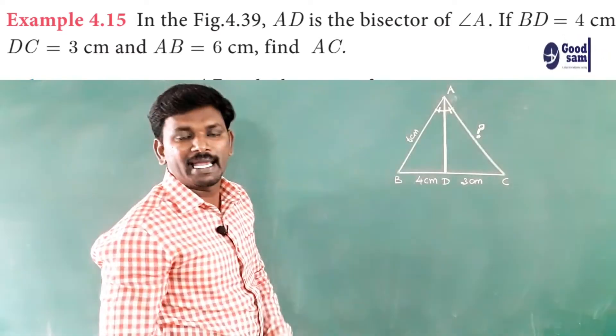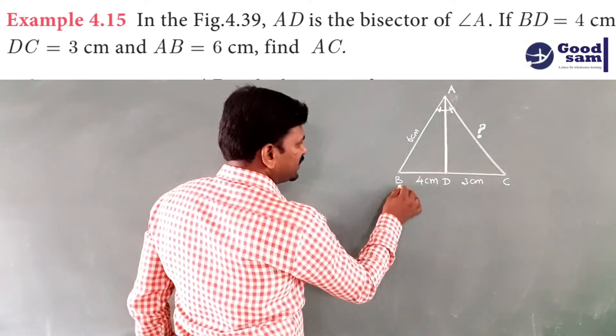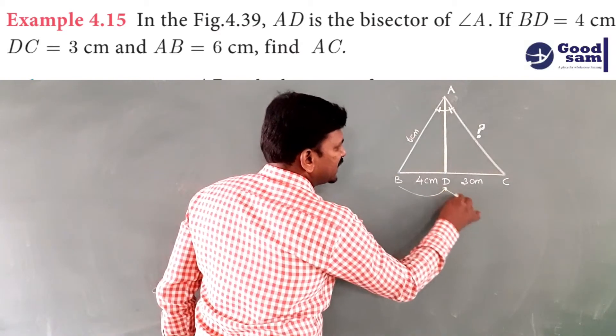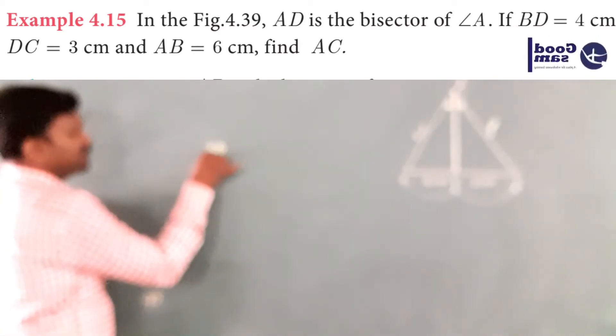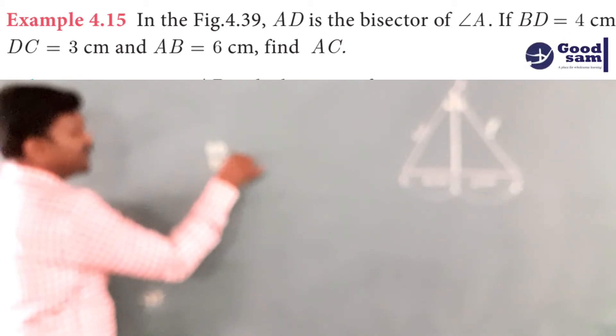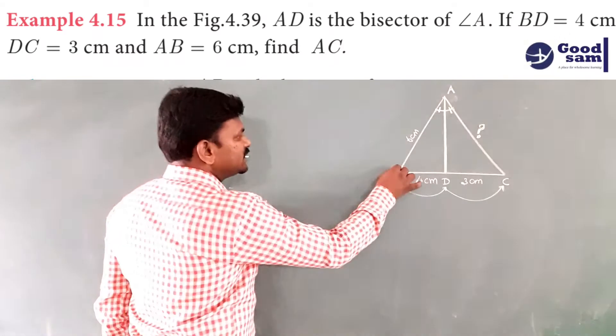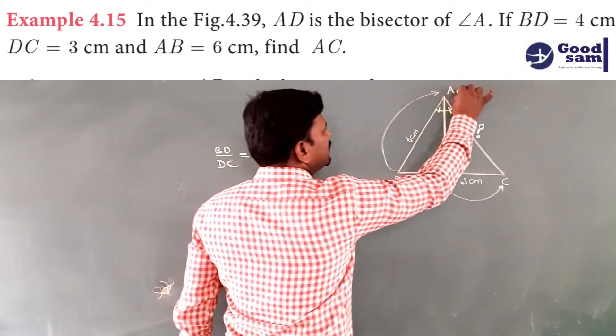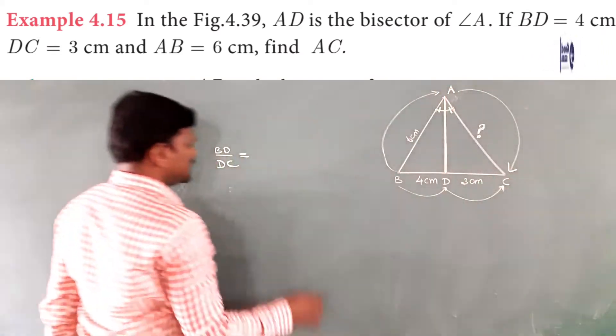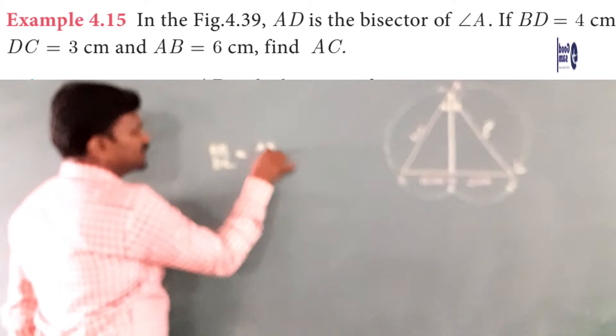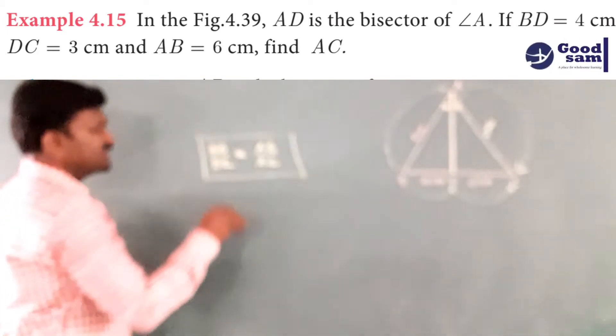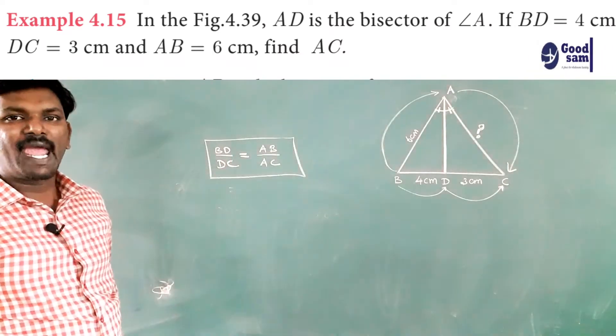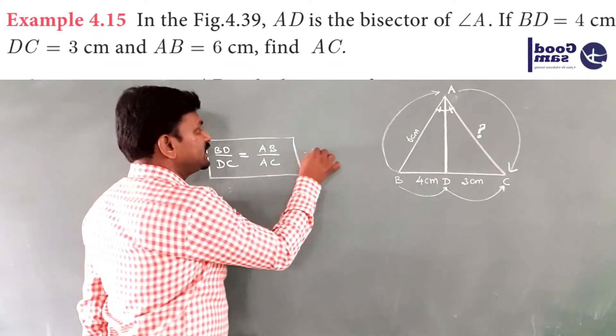We know the angle bisector theorem. BD by DC will be equal to AB by AC. This is the proof of the angle bisector theorem.